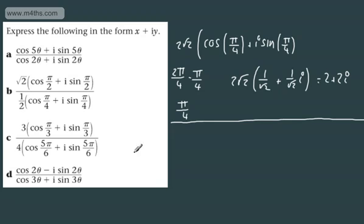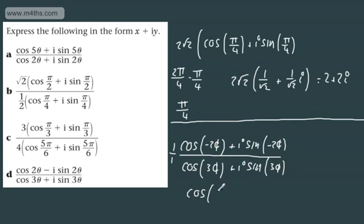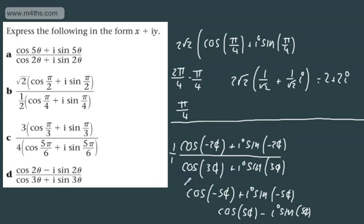Let's do this one. We rewrite it as cosine of minus 2 theta plus i sine of minus 2 theta, using the odd and even nature of these functions. Then we've got cosine of 3 theta plus i sine of 3 theta. Dividing: 1 over 1 is 1, and subtracting the arguments: minus 2 theta minus 3 theta gives minus 5 theta, so we get cosine of minus 5 theta plus i sine of minus 5 theta. Don't be surprised if you see that written as cos 5 theta minus i sine 5 theta — that's the same answer.